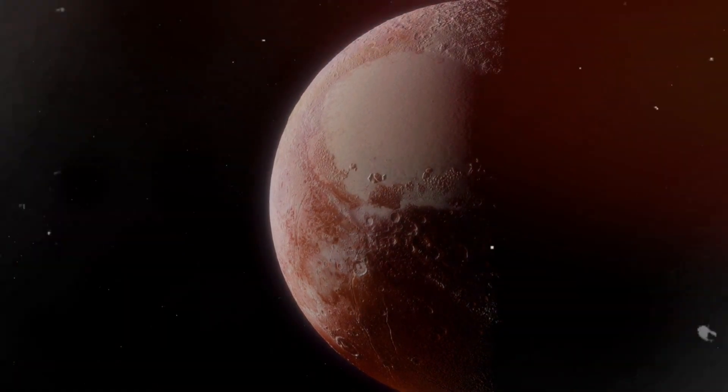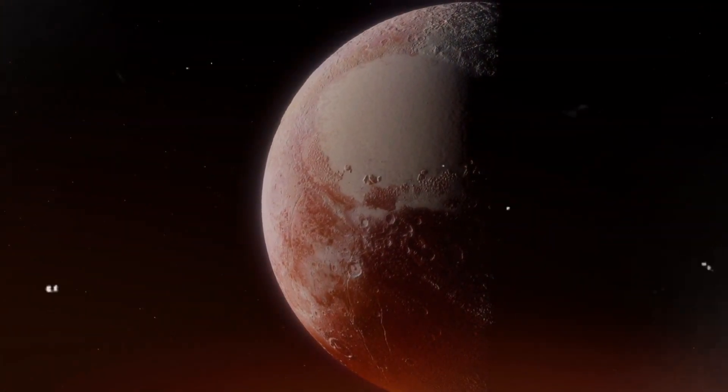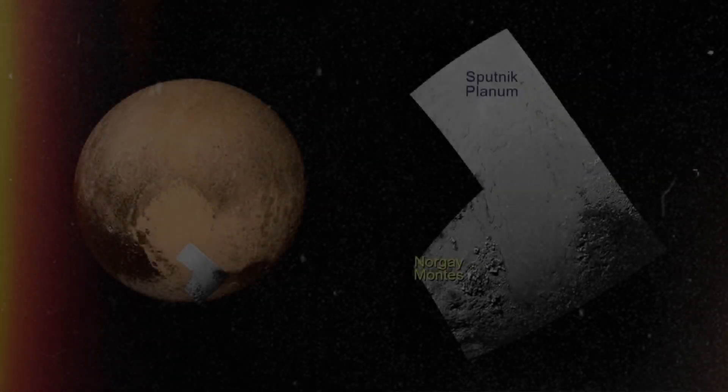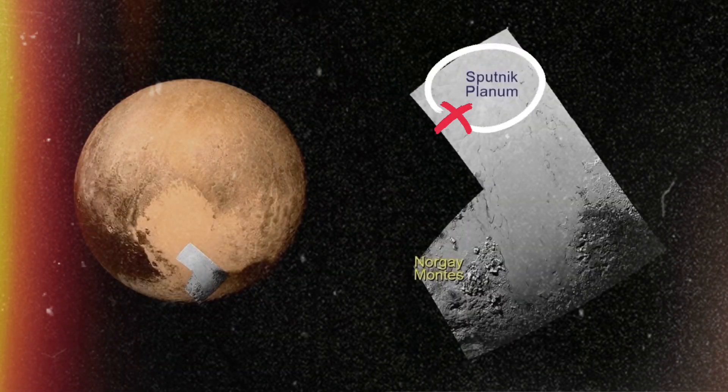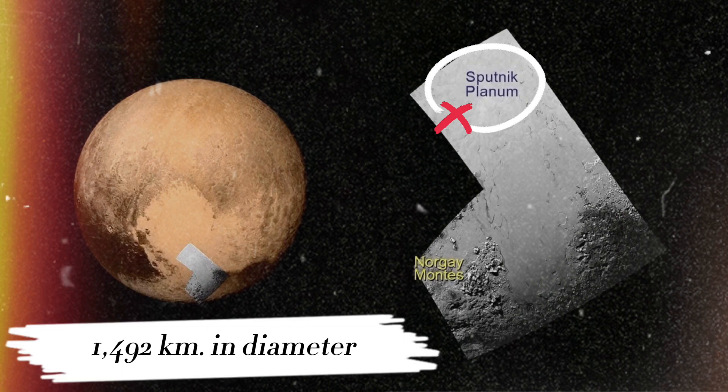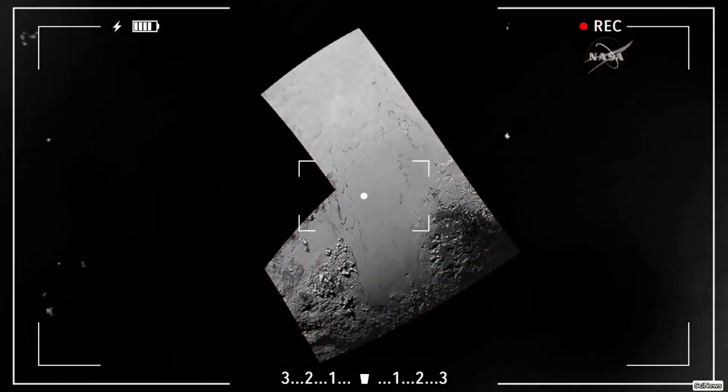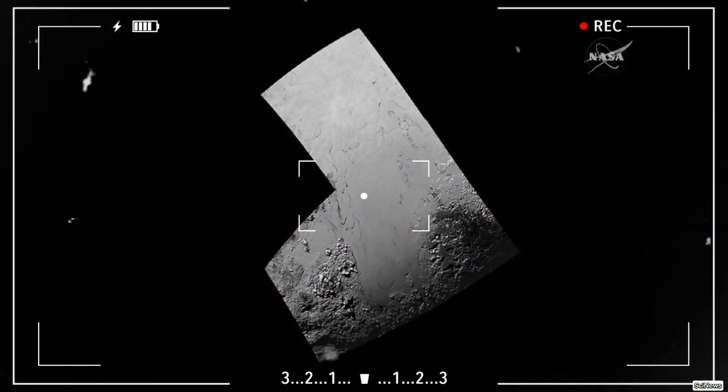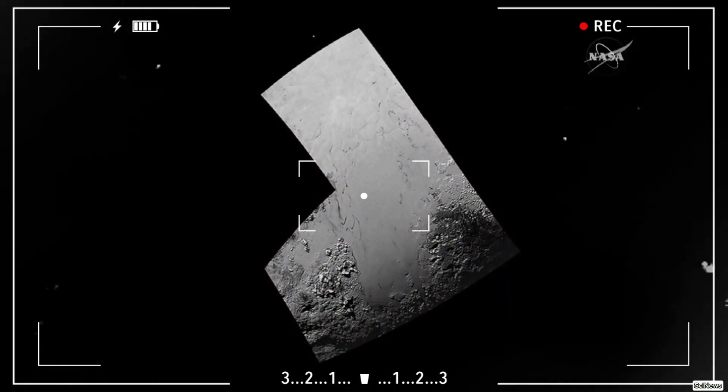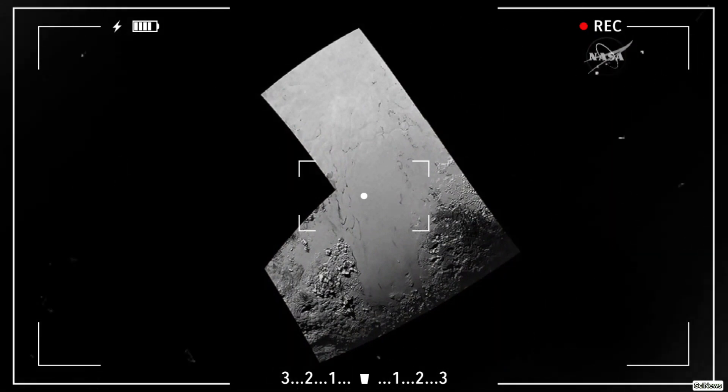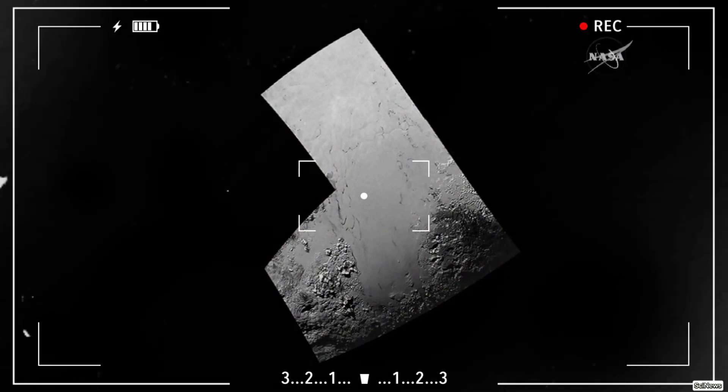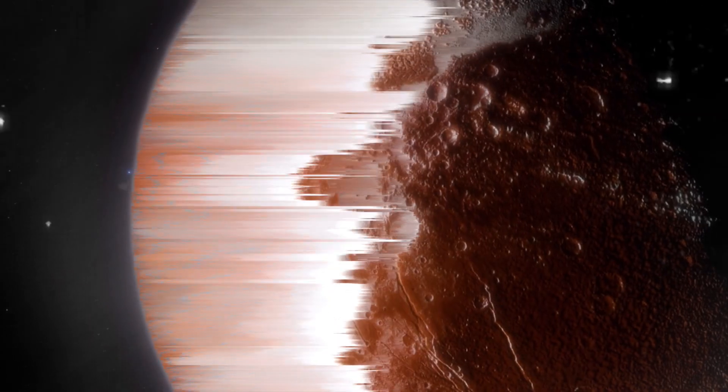However, Tombaugh Regio is a realm of diversity, not uniformity. In its western reaches lies the Sputnik Planum, an expansive, smooth, and radiant plain spanning 1,492 kilometers in diameter. When examined through the lens of an elevation map, this region unveils itself as a sprawling lowland expanse, providing an enthralling glimpse into the dynamic and multifaceted landscape that graces Pluto's icy terrain.